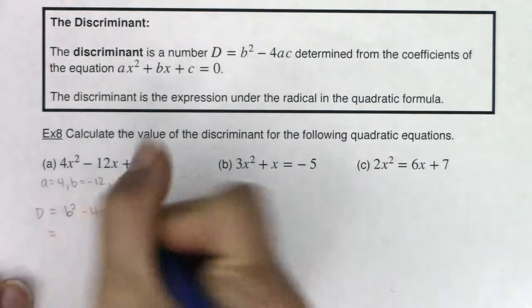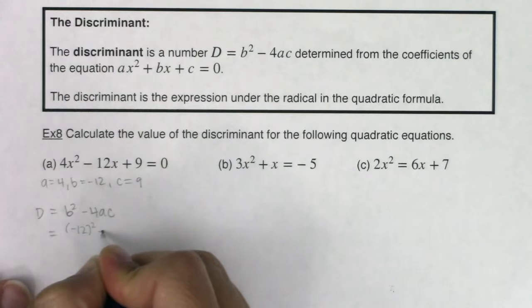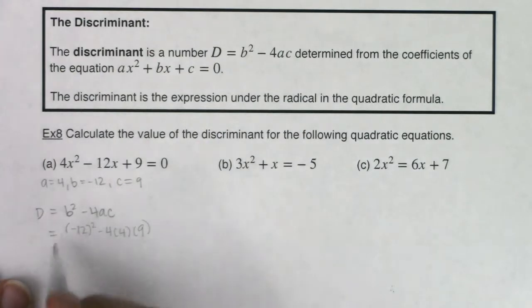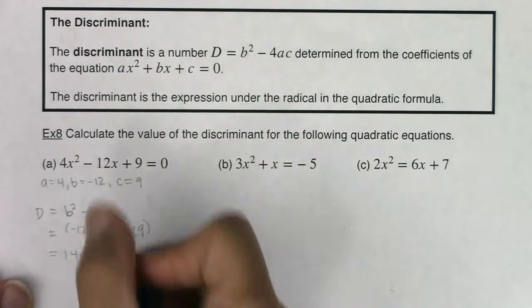So let's see what we're getting here, b squared would be negative 12 squared minus 4 times a times c. Well negative 12 quantity squared is 144. 4 times 4 is 16. 16 times 9 is actually 144.